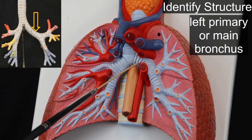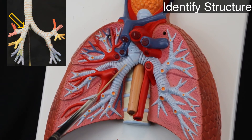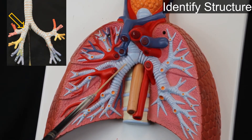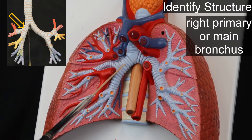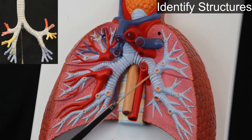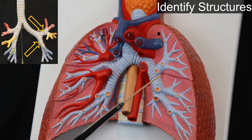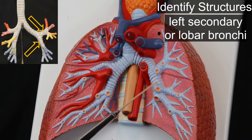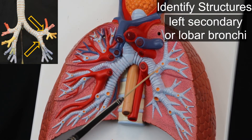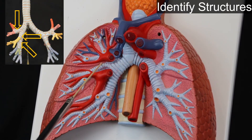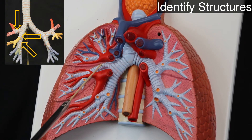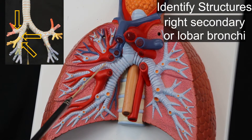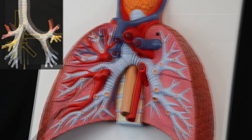ID. Structures: right pulmonary veins. Primary or main bronchus. ID. Structures: left pulmonary veins. ID. Structures: right secondary, or lobar bronchi.